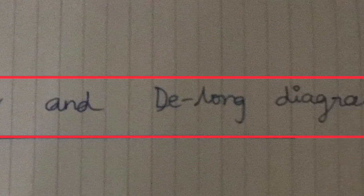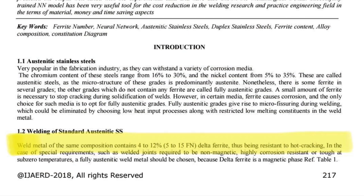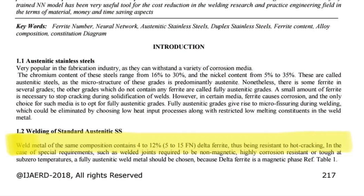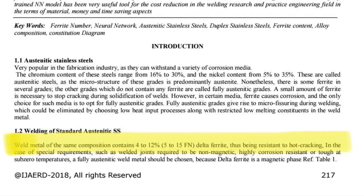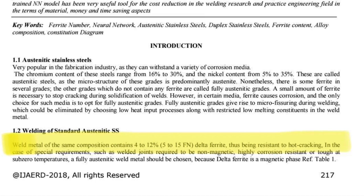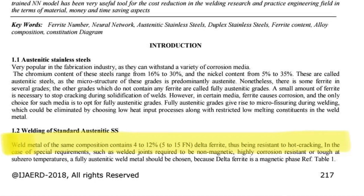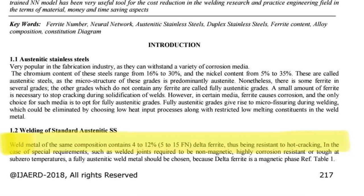Schaeffler and DeLong diagrams. Ferrite is important in avoiding hot cracking during welding of austenitic stainless steels. These diagrams are used to predict the ferrite level by comparing ferrite and austenitic stabilizing elements which is available in the composition.